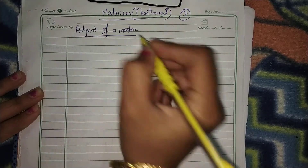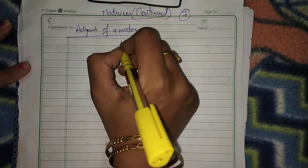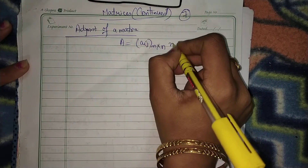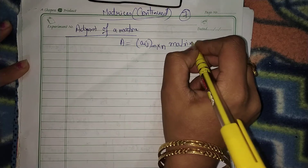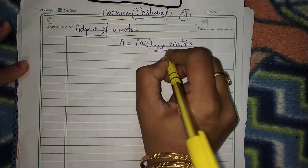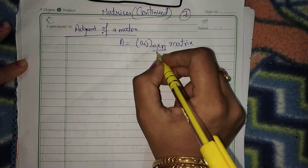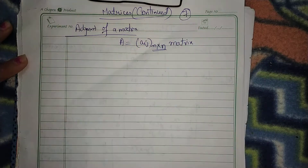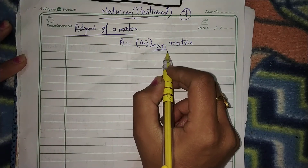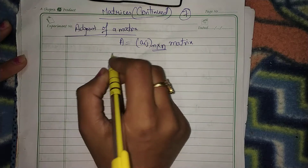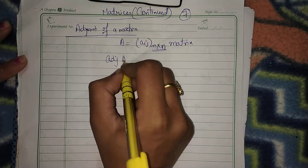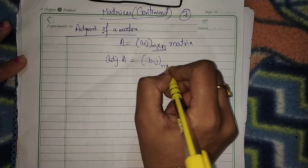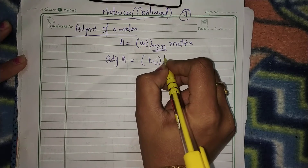What is adjoint of a matrix? If A equals aij is an n cross n matrix — that means it will always be a square matrix, where number of rows equals number of columns. If A equal to aij is any n cross n matrix, then the adjoint of matrix A will be the Bij matrix — it will be the transpose of that n cross n matrix.